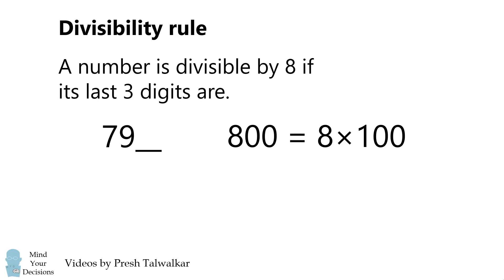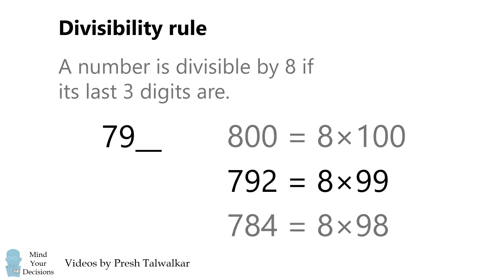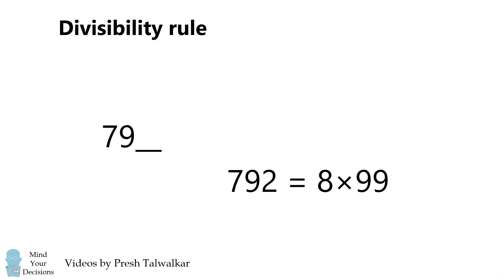Recall that 800 is equal to 8 times 100. If we subtract 8 from both sides, we get 792 is equal to 8 times 99. If we subtract 8 again from both sides, we get 784 is equal to 8 times 98. Seeing that two of the digits must be equal to 7 and 9, the only possibility that works is 792. Therefore, the last digit must be equal to 2.